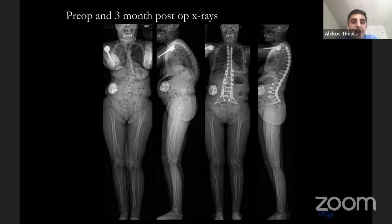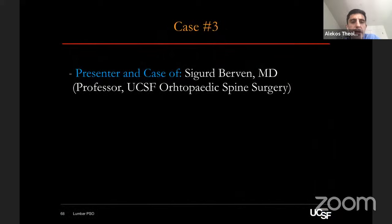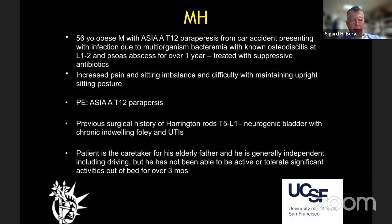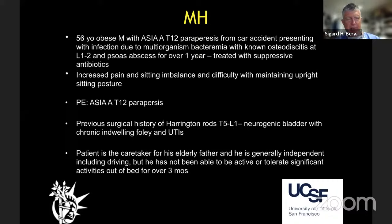We have four minutes left, so I'll run the third case quickly. This is a case recently presented by fellow Jay Shah. It covers the spectrum of osteotomies including three-column osteotomies. The patient is a 56-year-old male who was an ASIA A T12 paraplegic since age 21 after a motor vehicle accident in California. He was remarkably functional — worked as an engineer, was active, and served as primary care provider for his elderly father. He developed osteodiscitis at L1-2 with a psoas abscess, treated for over a year with suppressive antibiotics and drainage before being transferred to UCSF.